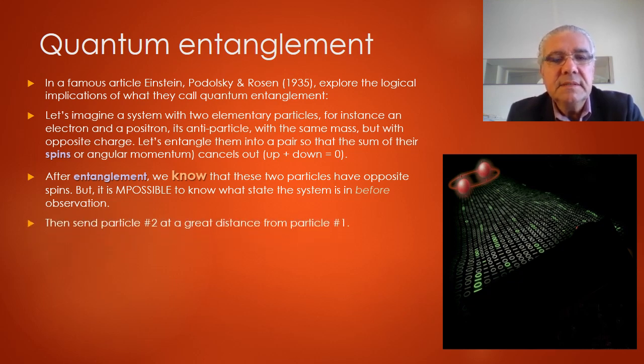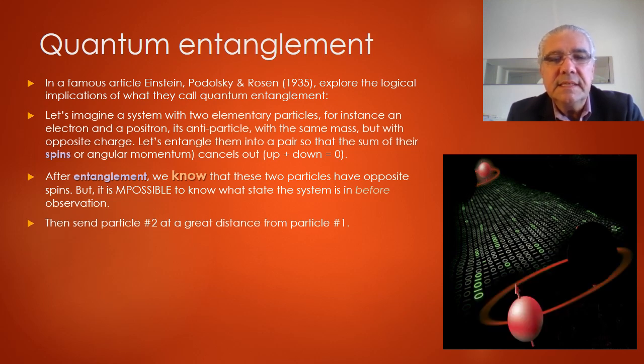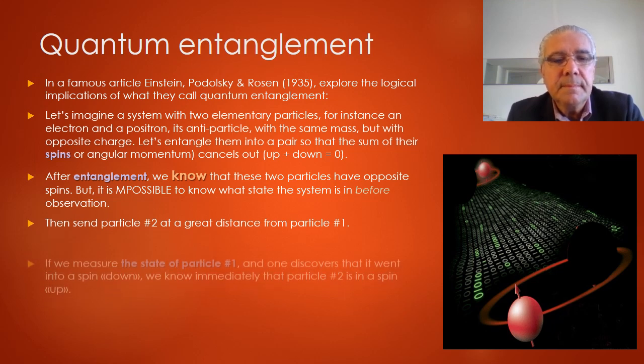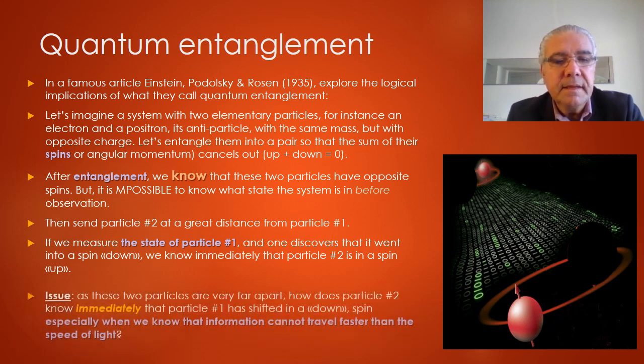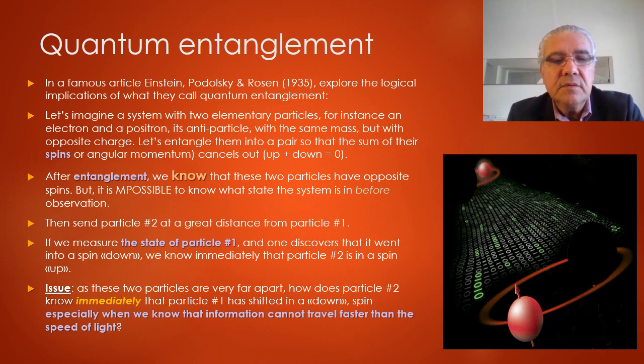That means we cannot know which particles has a spin up or down if we don't observe the system. Then let's do this experiment. Take that particle number two and send it in a very far distance from particle number one. If we measure the state of particle number one, which is the one that's remained at the origin, and one discovers that it went into a spin down, we know immediately that particle number two is in a spin up. But as these two particles are very far apart, how does particle number two know immediately that particle number one is shifting in a down spin? That would violate the fact that information travels at the speed of light, or that it can't travel faster than the speed of light, because this happens instantaneously. So that's the paradox of quantum entanglement.